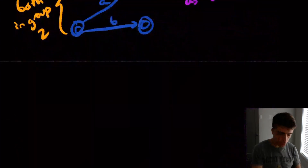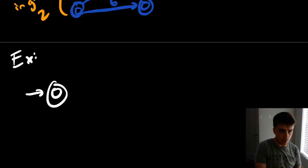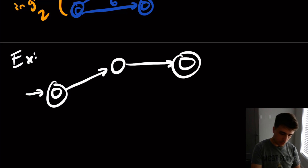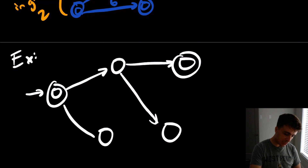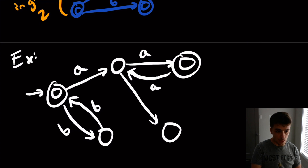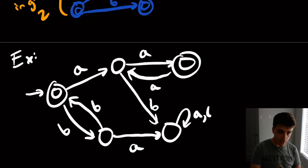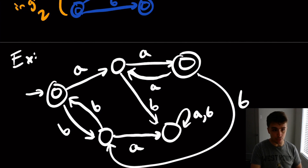Today we're going to do an actual example. We have a start state, a final state, and one more state — so five states total. There's a B transition going between two states, A transitions going between others, A and A going over here, B coming down, and A and B here, plus one B coming over. So we can see that we have five states here.